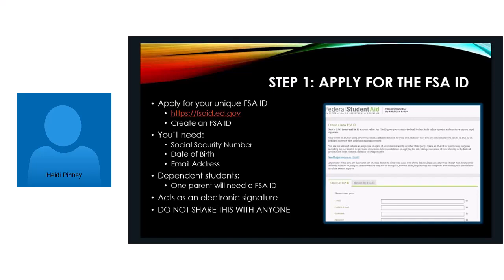If you are a dependent student — meaning you are under the age of 24, you're not active duty in the military, you are not married, you do not have a child — you are considered a dependent student. So you'll need to file the FAFSA form with a parent. You need an FSA ID and one parent needs an FSA ID, and they must be unique. The email addresses need to be different.